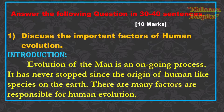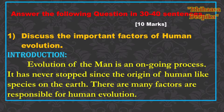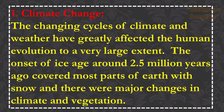Introduction: Evolution of man is an ongoing, continuous process. It has never stopped since the origin of human-like species on earth. There are many factors responsible for human evolution. The first factor is climate change.